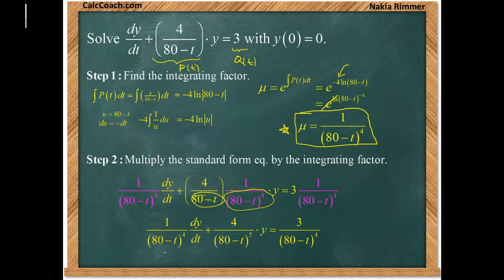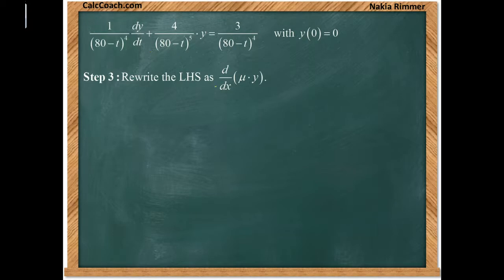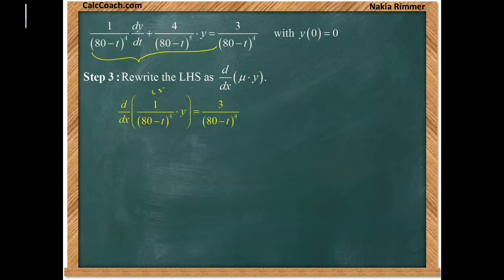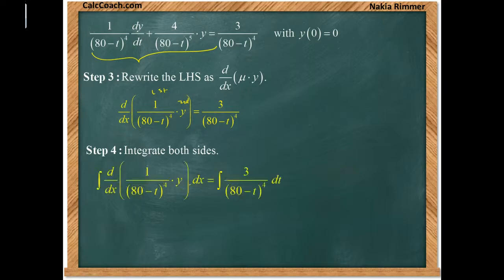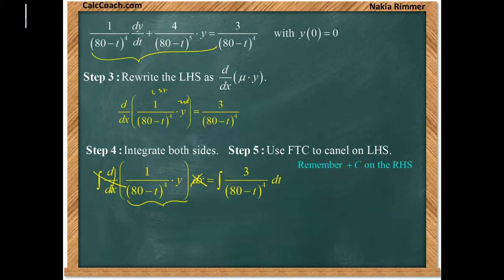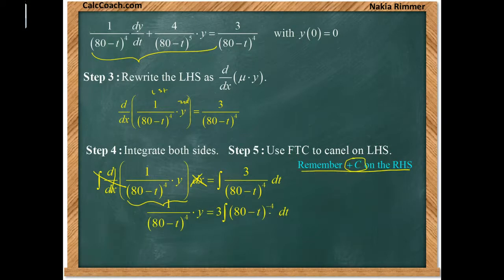We rewrite the left-hand side as the derivative of the integrating factor times y — that's d/dt [y · (80 − t)^(−4)]. The next step is to integrate both sides. By the Fundamental Theorem of Calculus, the left side just gives y · (80 − t)^(−4). On the right side we must integrate 3(80 − t)^(−4) and remember the plus C.